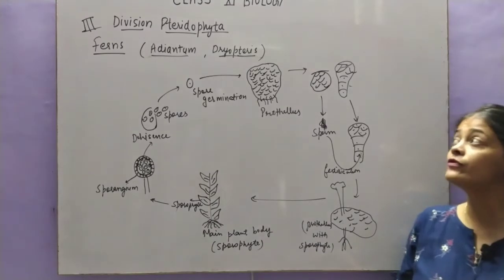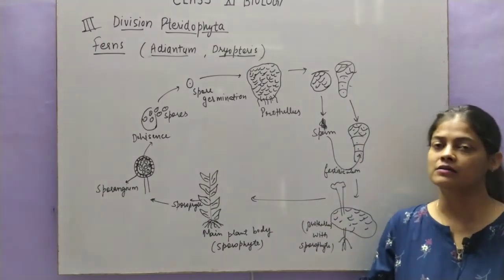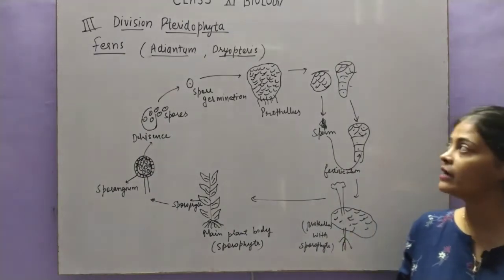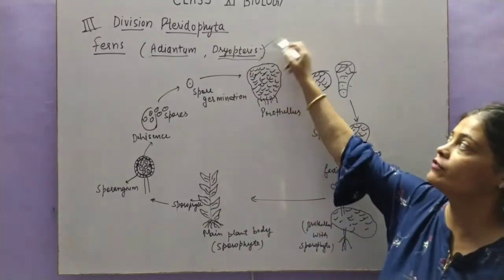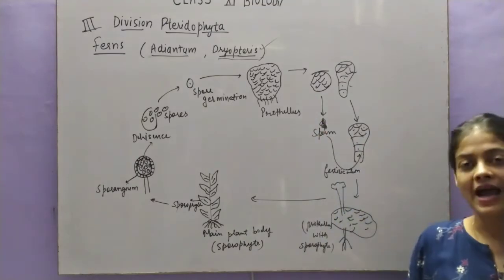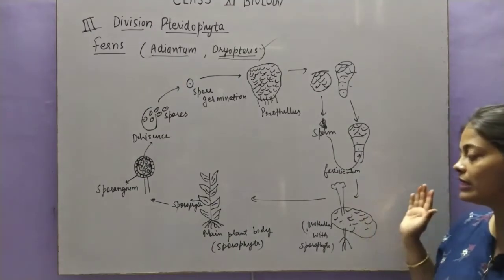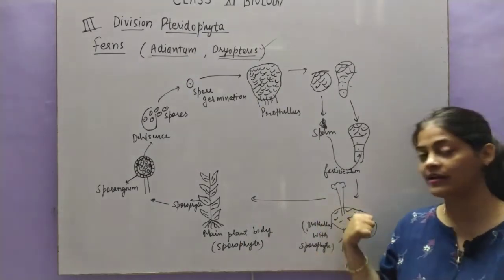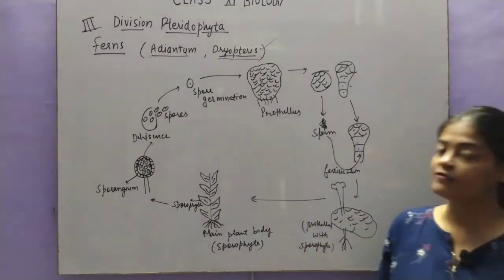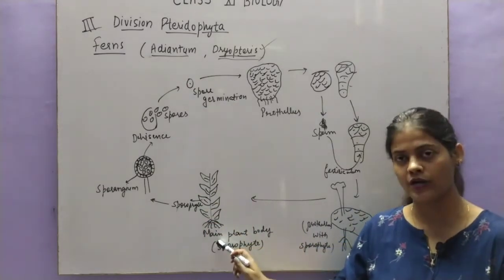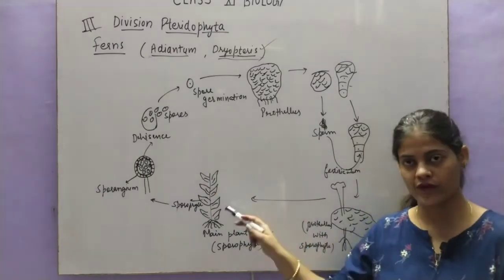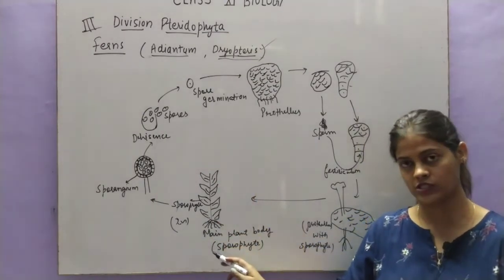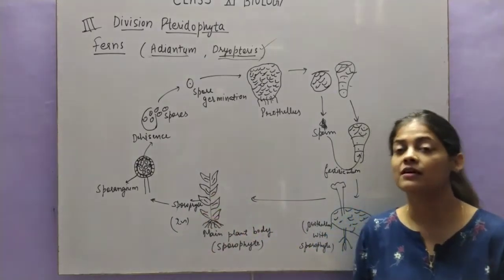To study the life cycle of pteridophytes, I have taken the example of a fern because ferns are included in the pteridophytes. Specifically, I have shown the life cycle of Dryopteris — two examples in ferns are Adiantum and Dryopteris. If you compare this life cycle with bryophytes, you will find it shows some evolutionary history connecting to gymnosperms, which is the next plant coming. This is the sporophyte, which is the main plant body in pteridophytes — a diploid structure — and it is well developed with stem, leaves, and roots.